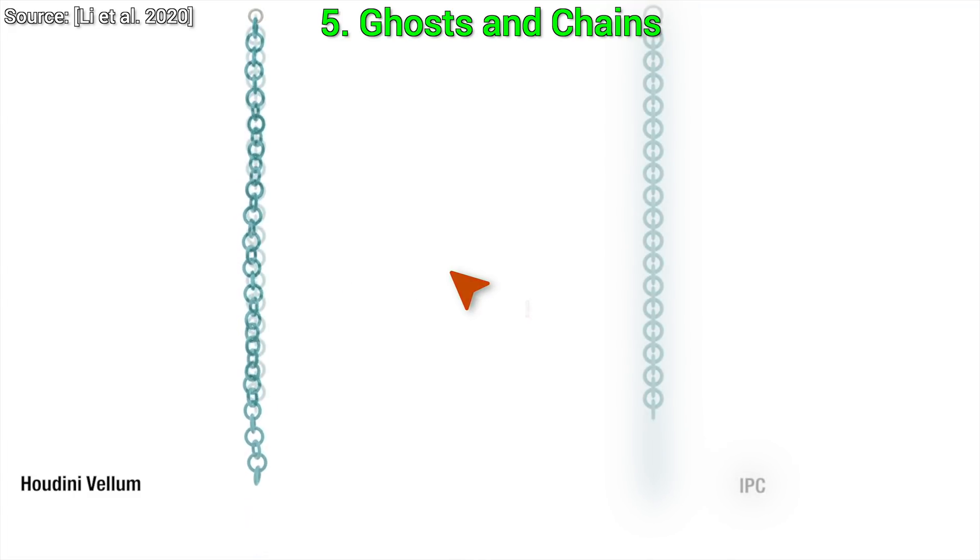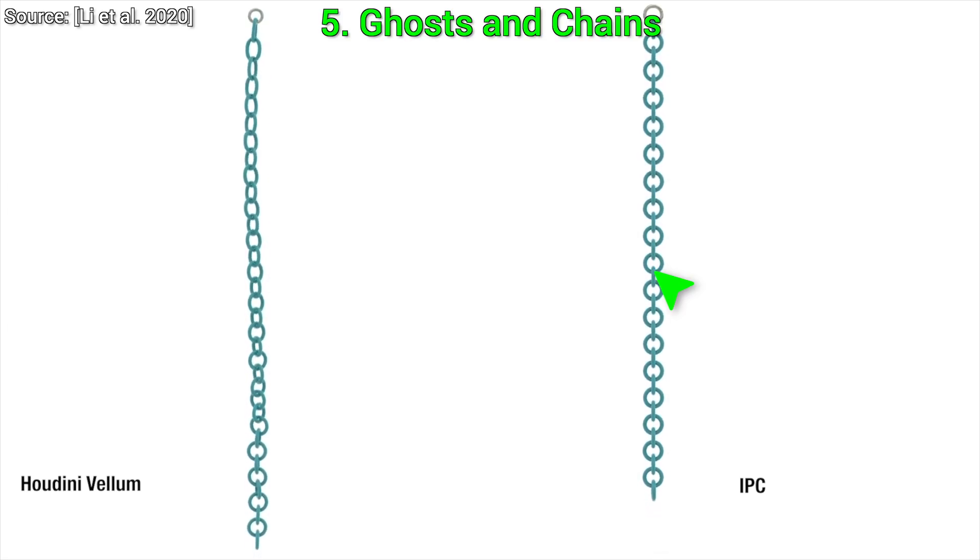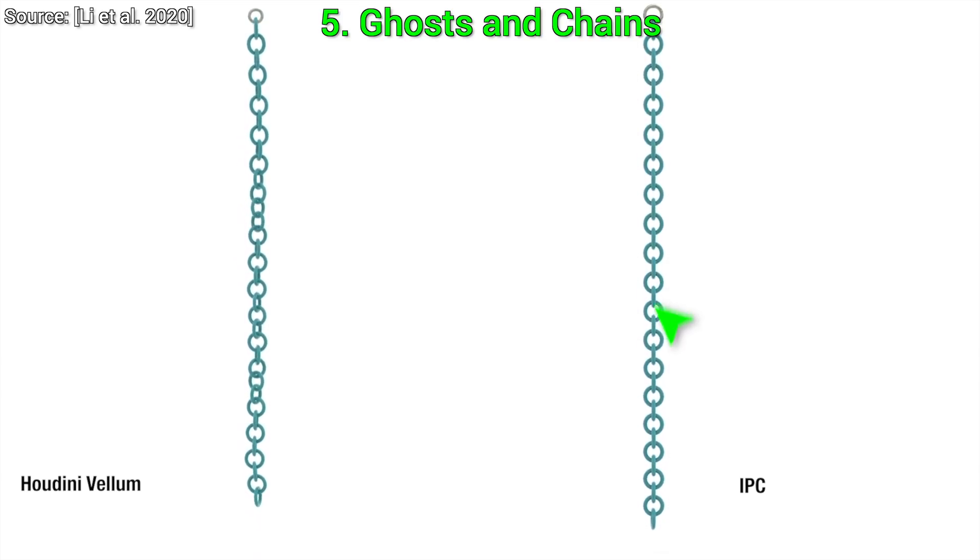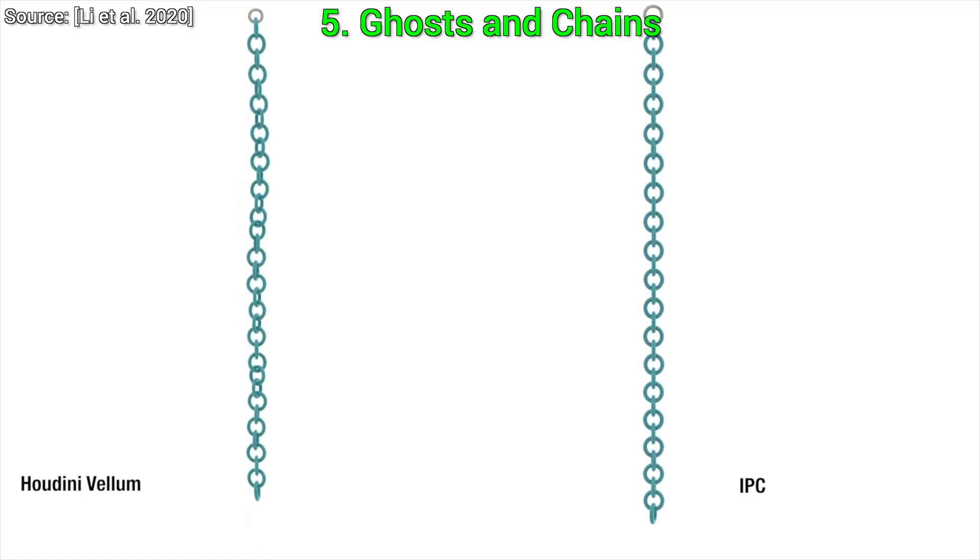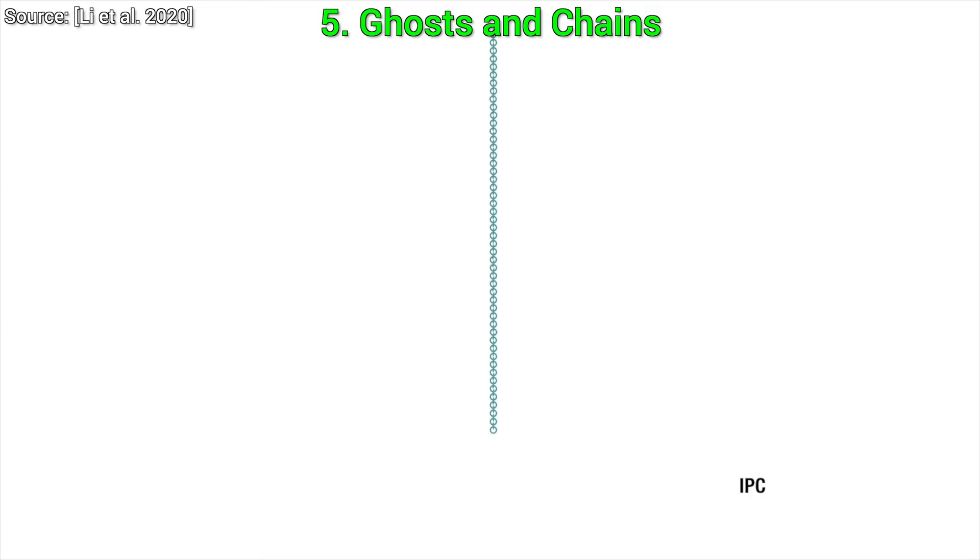Artificial ghost forces appear even on a simple test case with 35 chainlinks. And I wonder if the new method can deal with these 35 chainlinks. The answer is a resounding yes. No ghost forces. And not only that, but it can deal with even longer chains, let's try a hundred links. Oh yeah, now we're talking.